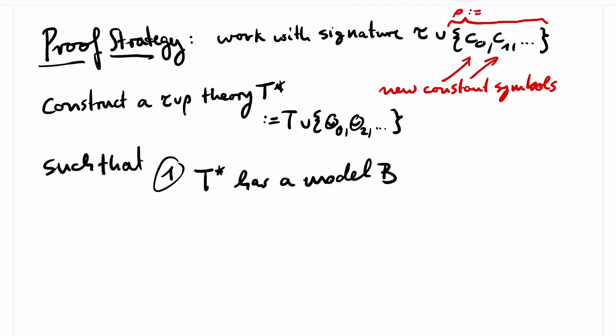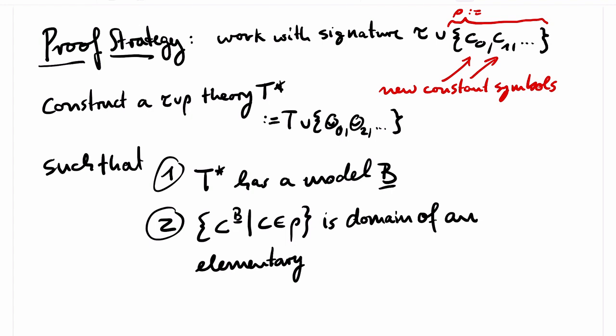First of all, T star should have a model B. For this step, we will use the compactness theorem. Moreover, the set of all elements of B denoted by some of the new constant symbols from rho must be an elementary substructure A. Here we will use Tarski's test. Finally, we will make sure that A omits P.